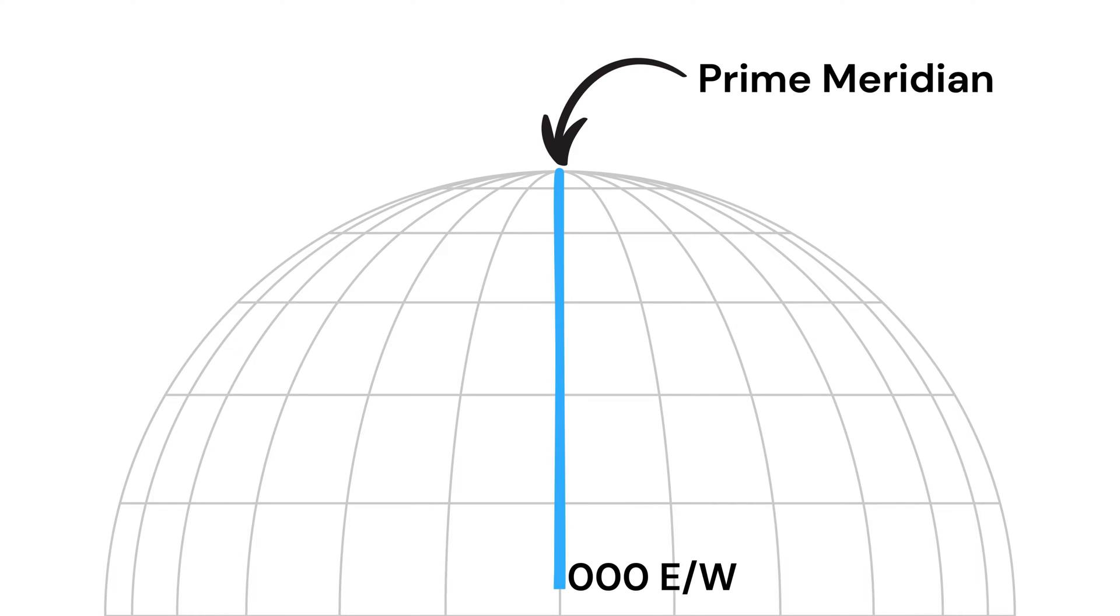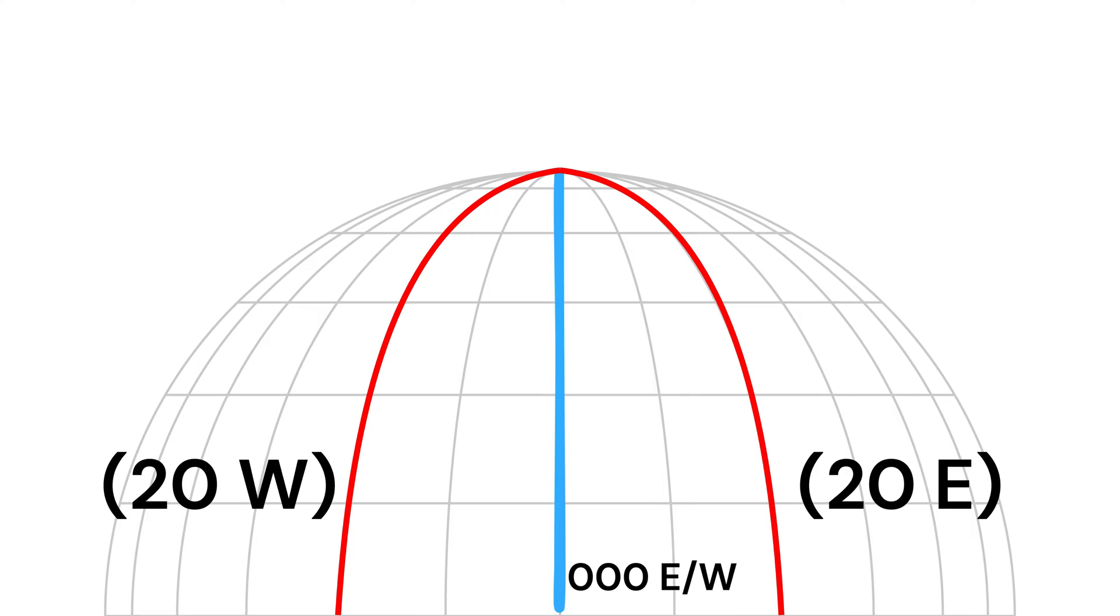The middle one for reference is the prime meridian. For our example, let's focus on two meridians: 20 degrees west and 20 degrees east.